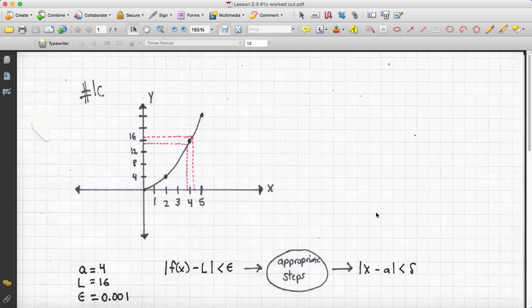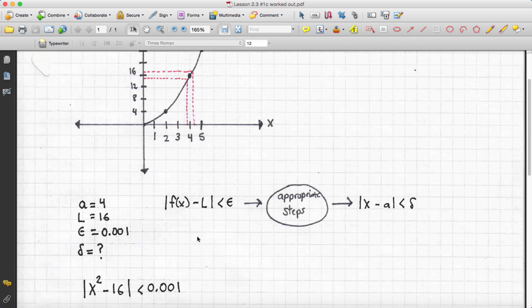It's centered at 4. We know the limit as x goes to 4 of x squared is equal to 16. And we're given an epsilon value of 0.001. So we know the value of a, we know the value of L, we know the value of epsilon.